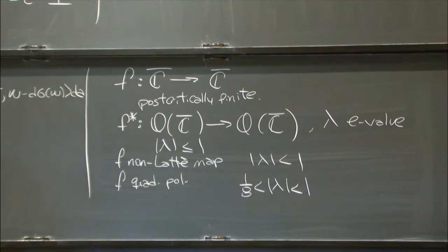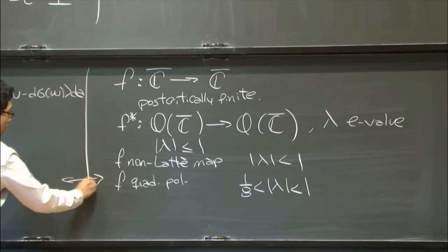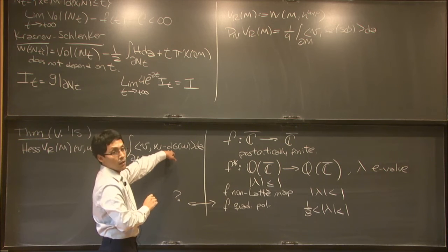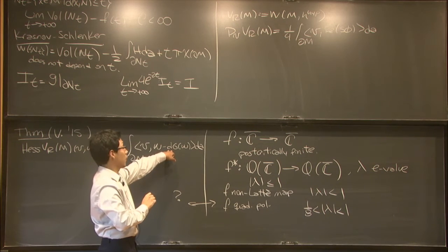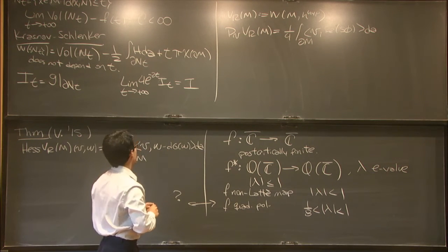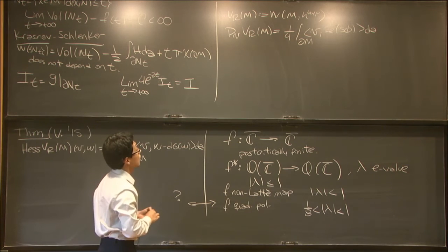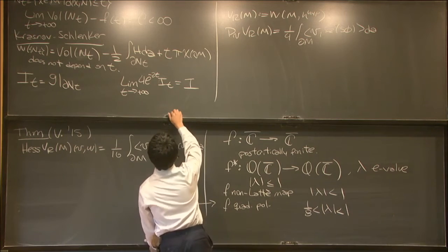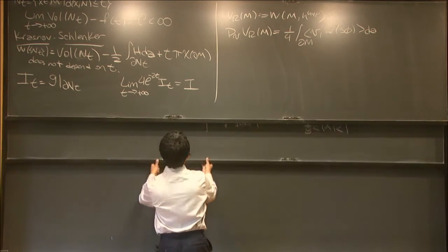So you should think that this map is in a way mirroring what's happening with the skinning map. This corresponds to the condition for being acylindrical. And why this analogy is interesting, because we still don't know what I should put here in order to have a spectral gap result for the skinning map. So the fact that this is already linked to renormalized volume tells us that if we cross our fingers, then maybe something will happen there.